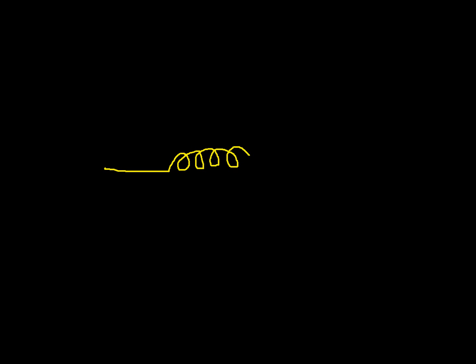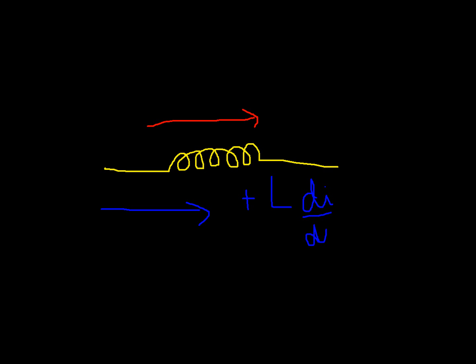Next let's take the inductor — I guess that's the only element left. So this is the inductor and these are the coils. Assume that current flow is in this direction. If you are travelling in the direction of current flow, add plus L·dI/dt to the equation. If you are travelling against the direction of current flow, subtract L·dI/dt from the equation.